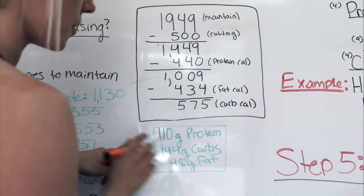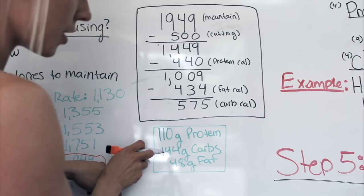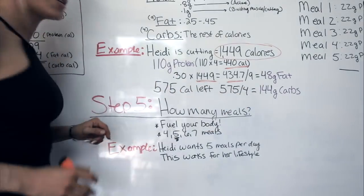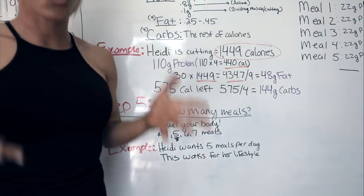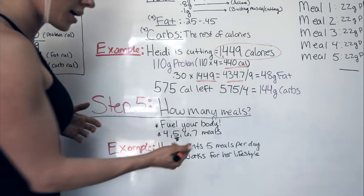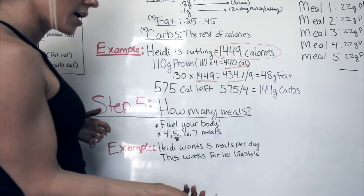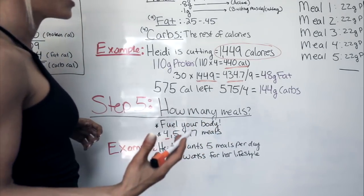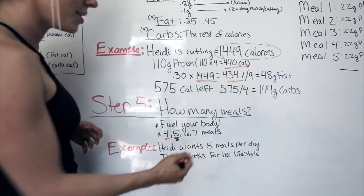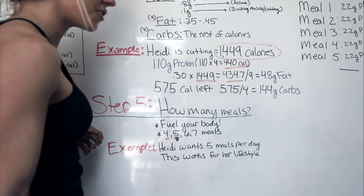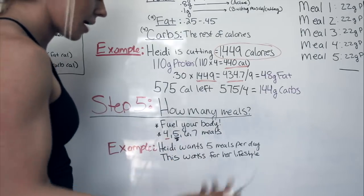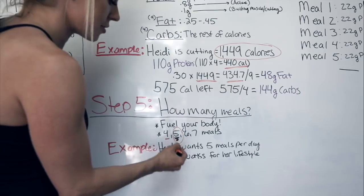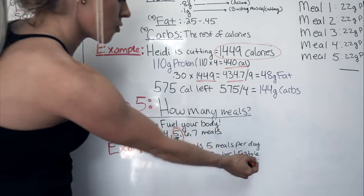So the final macro breakdown is: 110 grams of protein, 144 grams of carbs, and 48 grams of fat — all at 1,449 calories for cutting. Step five is how many meals you should eat. This depends on you. When I prepped for shows I ate closer to seven small meals a day, but I don't have time for that now. Including a protein shake as a meal, I end up having about five meals per day — which works for my lifestyle.